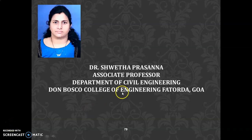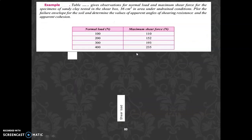Let us take some more examples on the shear strength chapter. The table gives observations for normal load and maximum shear force for specimens of sandy clay tested in a shear box of 36 square centimeters in area under undrained conditions. The normal load values are 100, 200, 300, 400 Newton and shear force values are 110, 150, 193, and 235 Newton.